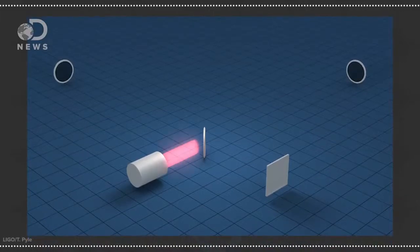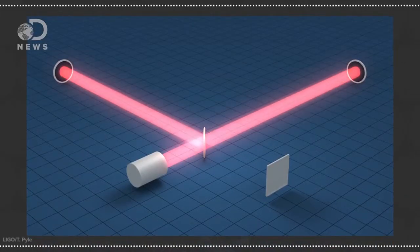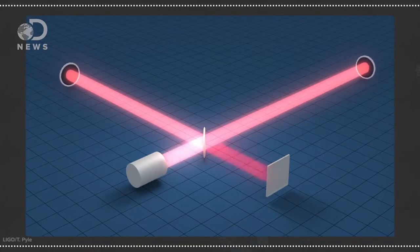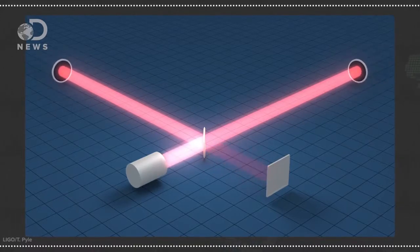LIGO was able to detect such a tiny wiggle by using two labs, one in Livingston, Louisiana, and one in Hanford, Washington. The labs used massive and precise lasers, like 2.5 mile long laser beams that can read 10,000 times smaller than a proton. These lasers were fired into two L-shaped pipes that bounced light around a series of mirrors. A strain in space-time would change the timing of when the lasers reached their destination. And that's just what happened on that fateful day.